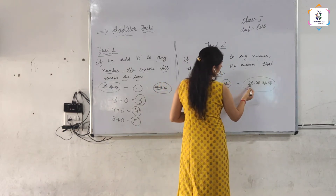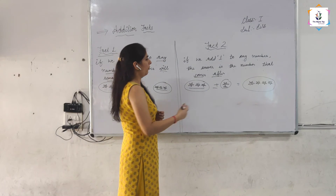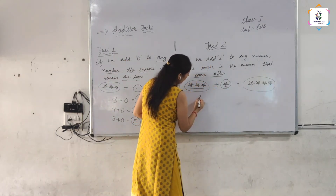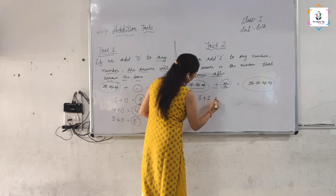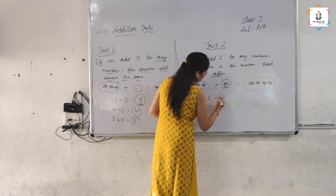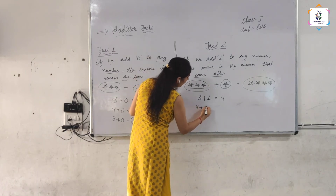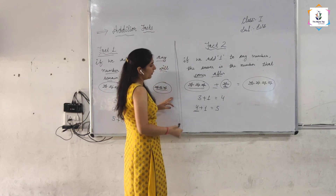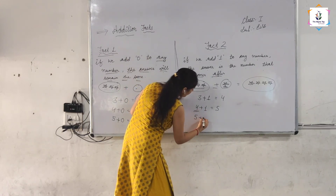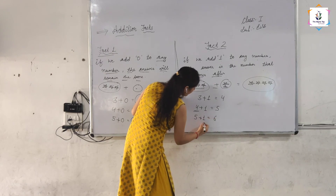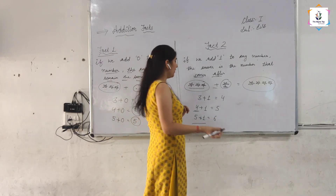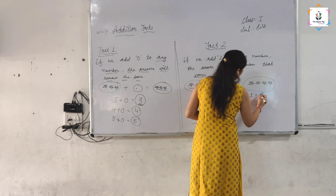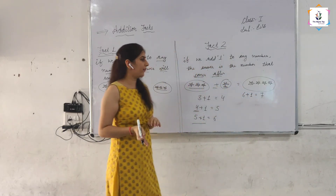1, 2, 3, 4. 4 comes after 3. 3 plus 1 is equal to 4. 4 plus 1 is equal to 5. 5 comes after 4. 5 plus 1 is equal to 6. 5 comes after 6. 6 plus 1 is equal to 7. 6 comes after 7.